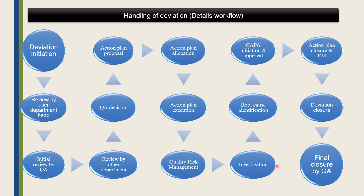After quality risk management, you need to investigate the deviation in detail based on the type of deviation. Based on the investigation, you identify a probable or confirmed root cause. Based on the root cause identification, you initiate a CAPA. After initiating the CAPA, the action plan closure can be done, and effectiveness monitoring of the CAPA shall be initiated. Finally, the deviation closure is initiated by the user department and the QA head will formally close the deviation. This is the complete workflow from deviation initiation to final closure.